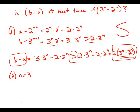Well, that's interesting because now we can actually figure out 3 to the 3 minus 2 to the 3. Well, that's 27 minus 8. That's 19. Twice of that, of course, is 38. And so really the question boils down to is b minus a greater than 38.